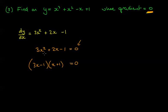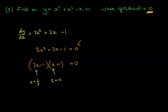Setting each bracket to zero: 3x − 1 = 0 gives x = 1/3, and x + 1 = 0 gives x = −1. So there are two points on the graph where the gradient equals 0: at x = 1/3 and x = −1.